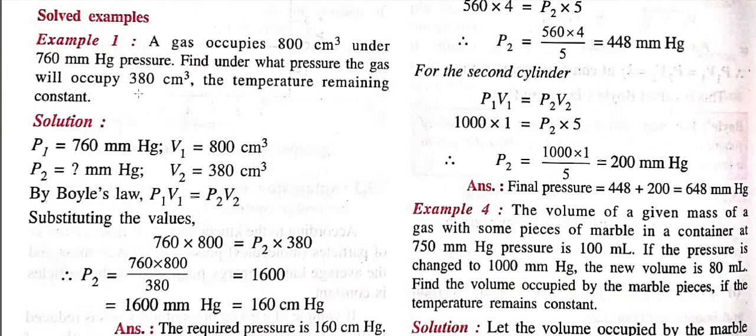So first what you need to do is, first you will write down the givens. Say for example, a gas occupies 800 cm³, so cm³ is the volume, and under 760 mmHg pressure. So, the value for p1, that is initial pressure, is 760 mmHg. And v1, volume 1, that is initial volume is 800 cm³.